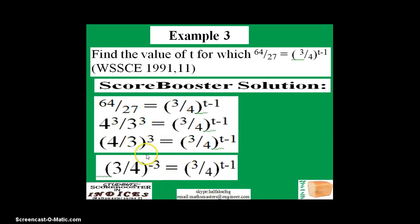If 3 goes up and 4 comes down, this exponent we change from positive to negative. Now you can equate the exponents because you have 3 over 4 here and you have 3 over 4 here. So equating the exponents, you're gonna have negative 3 equals t minus 1, and your answer will be t equals negative 2.